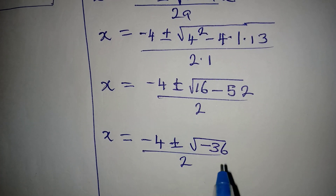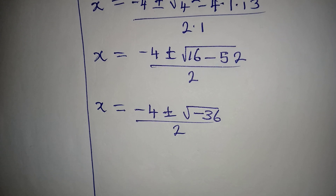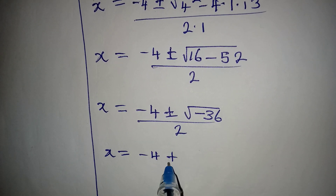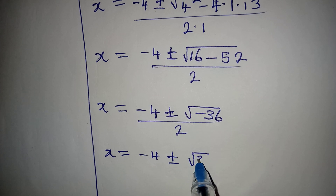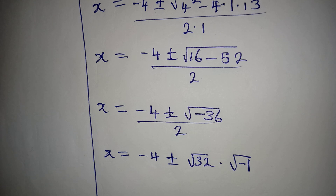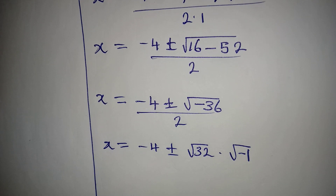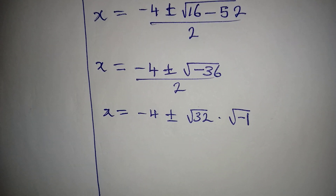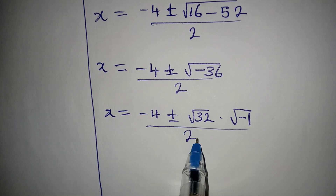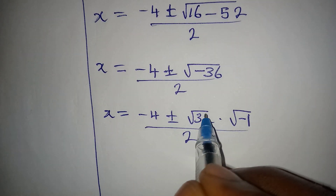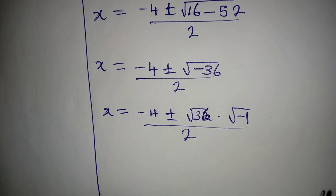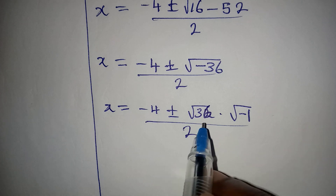We write √(-36) as √36 · √(-1). So x = (-4 ± √36 · √(-1)) / 2. Note: this should be 36, not 32 as previously mentioned.